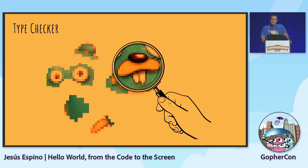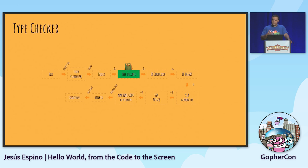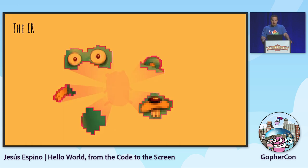Once you have this AST representation, you can do type checking. The type checker collects all the package objects and checks the types for objects at package level - everything that is not a function body. Then in a second pass it checks all the function bodies, because you need the context of the whole package objects to properly check the types of function bodies. I'm not going to go into too much detail here due to time constraints, so I'll go directly to the intermediate representation.